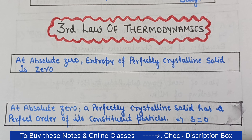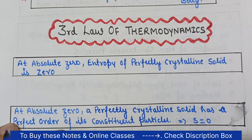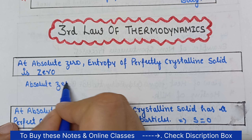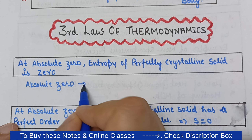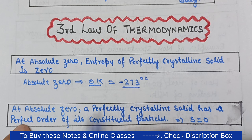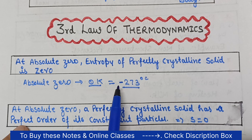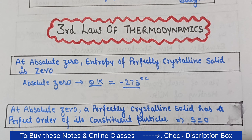When it comes to absolute zero temperature, absolute zero is important to understand first. Absolute zero means zero Kelvin. Theoretically, the lowest possible temperature is 0 Kelvin. If you convert 0 Kelvin to degrees Celsius, it will be minus 273 degrees Celsius. So absolute zero means 0 Kelvin, or minus 273 degrees Celsius.